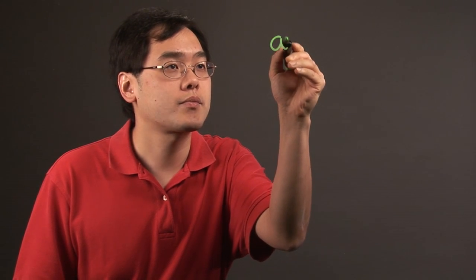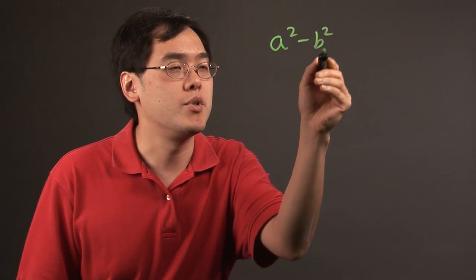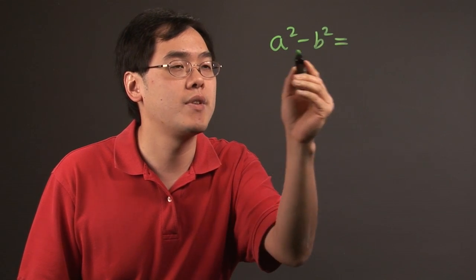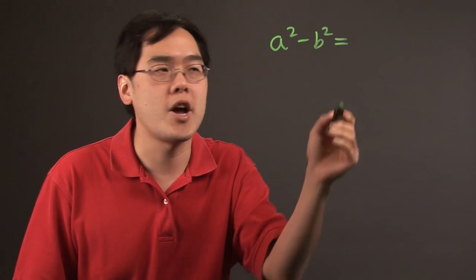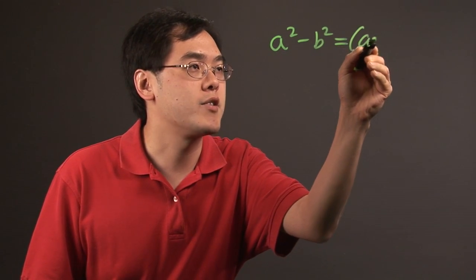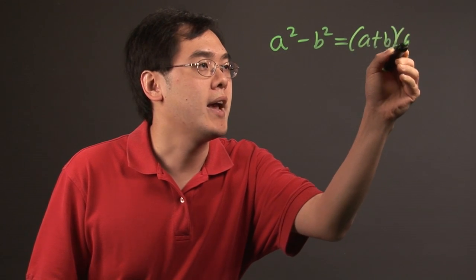A special case, for example, in algebra would be special cases in factoring. If you have the difference of two squares, you might be presented with this little fact: a squared minus b squared. If you have two terms that are squared, subtracting by each other, it can be factored as a plus b, a minus b.